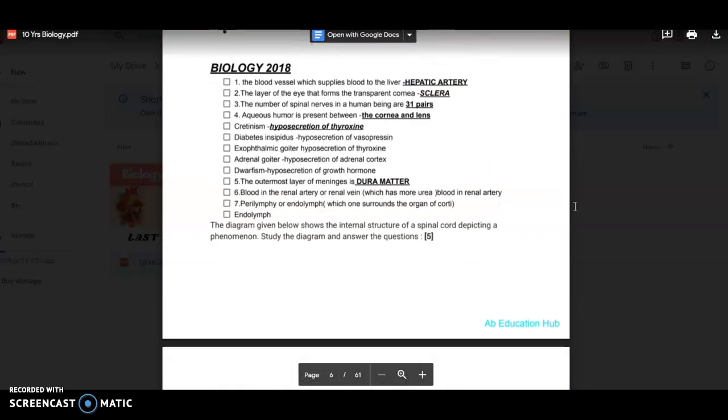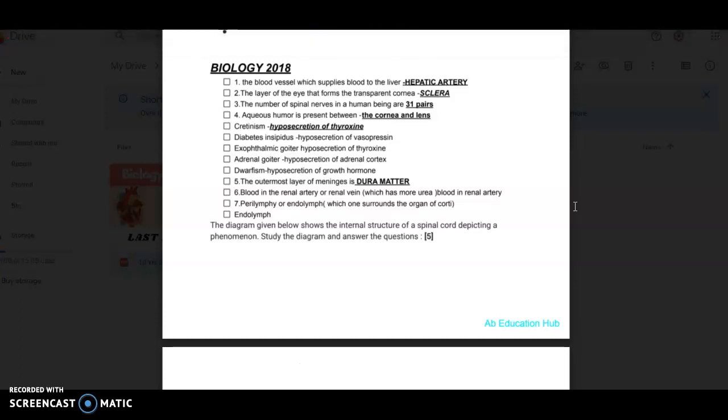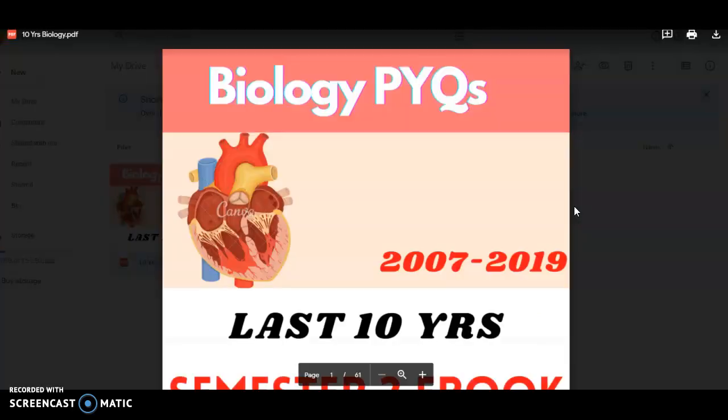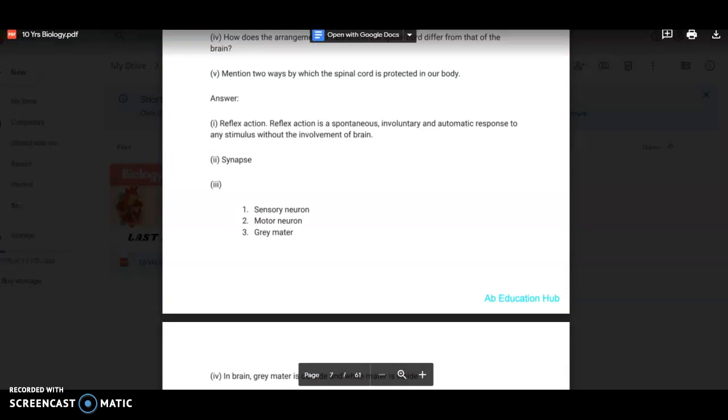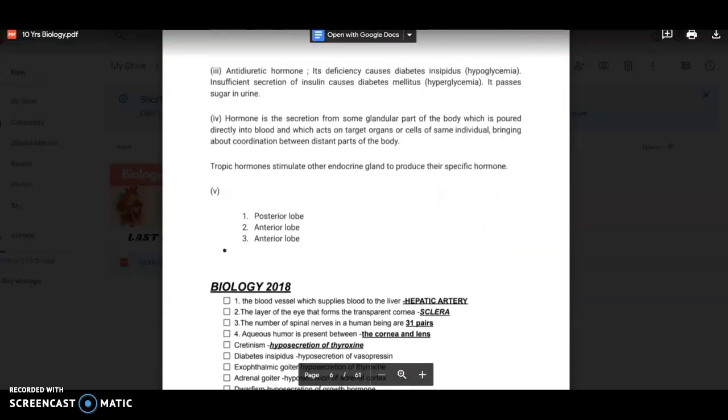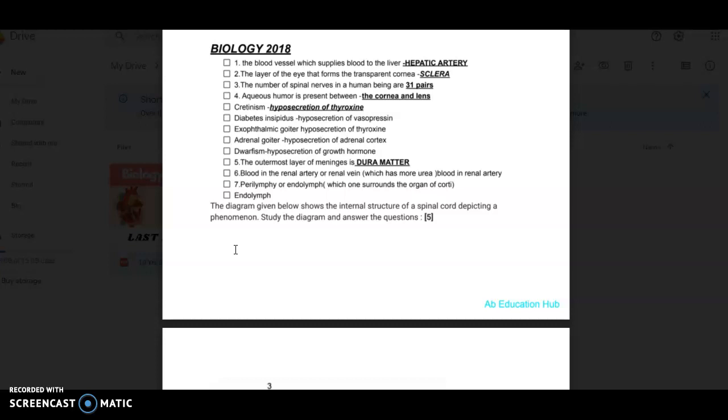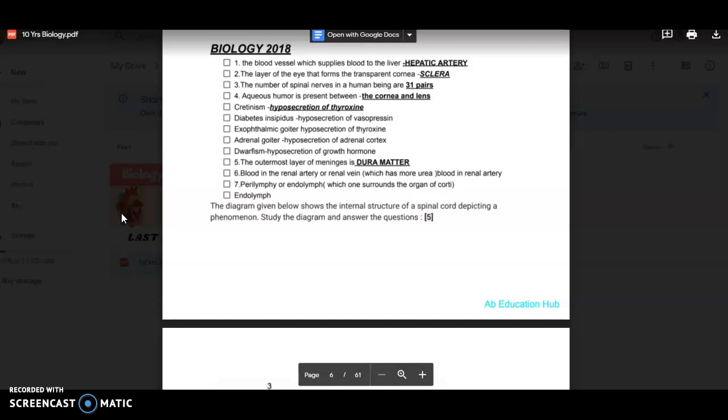The blood vessel which supplies blood to the liver, answer is hepatic artery. The layer of the eye that forms the transparent cornea, that is sclera. Number of spinal nerves in a human being: 31 pairs. If you've read every line in your book and you've done it well, then only you can answer all these questions. Otherwise it's very complicated to recall everything. Then the number of spinal nerves we have done it. Aqueous humor is present between the cornea and lens. Again, the locality of all these things.